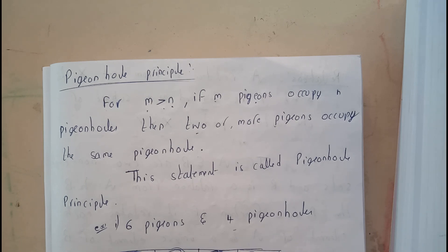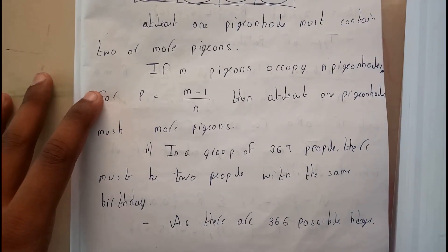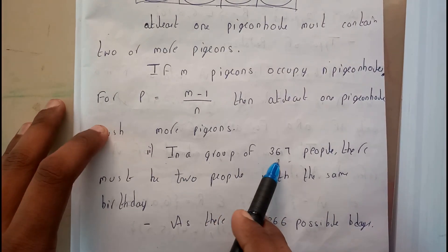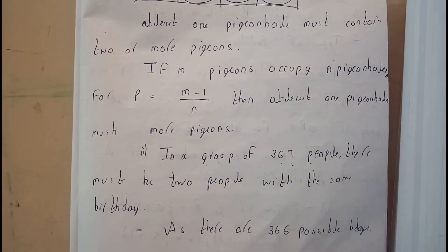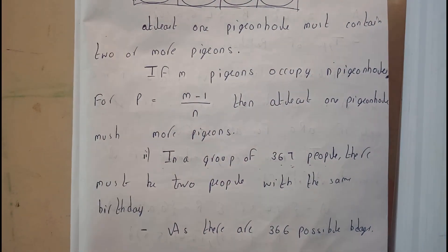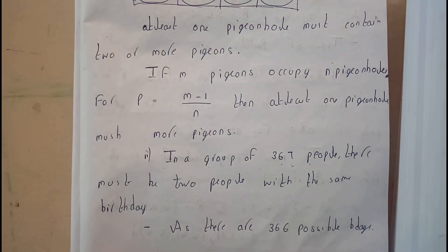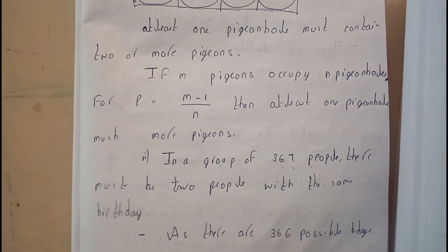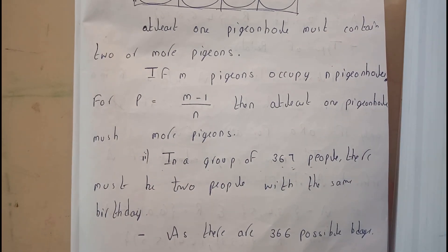Now let's take another example. In a group of 367 people, there must be at least two people with the same birthday, as we have only 366 days in a year at maximum. So the 367th person must share a birthday with someone else.